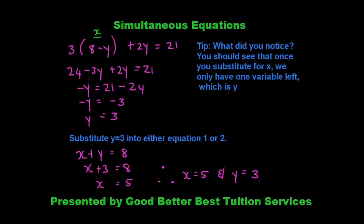That gives us negative y is equal to 21 minus 24, so negative y equals minus 3, and therefore y equals 3. However, that's not the end of the story — we still need to solve for x. We substitute y equals 3 into either equation 1 or equation 2. Choosing equation 1: x plus 3 is equal to 8, so x is equal to 5. Therefore x equals 5 and y equals 3.